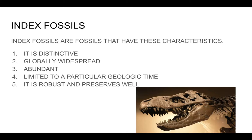Anything that went extinct during that time is not going to be found above that K/PG boundary layer. A good index fossil has these characteristics: it is distinctive, globally widespread, abundantly preserved, limited to a particular geologic time, and robust enough to preserve well — because even if it's indicative of a particular time, if it doesn't fossilize well, we won't have enough of them to study.